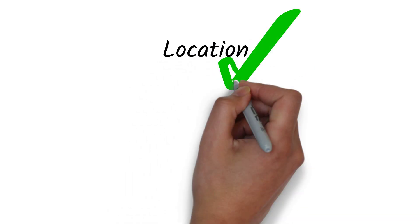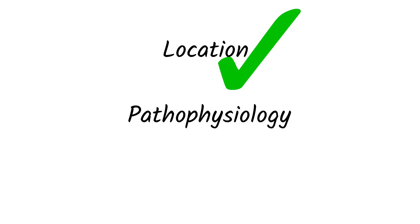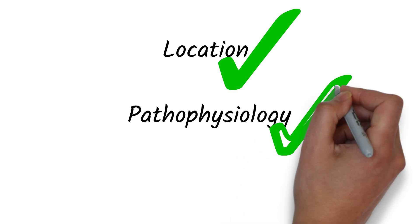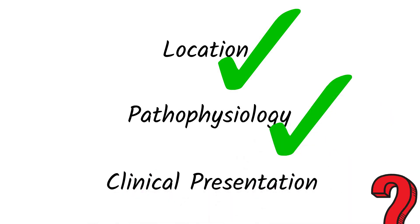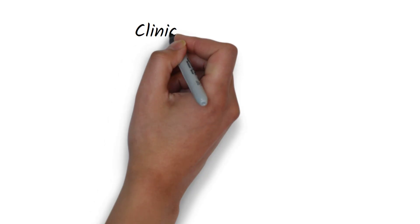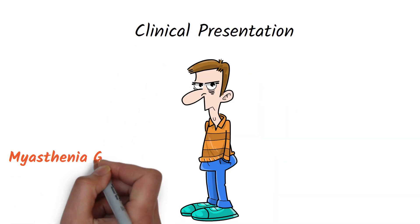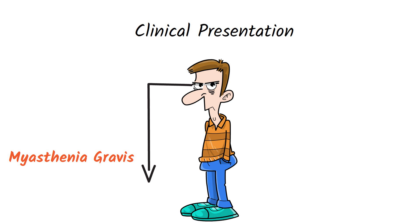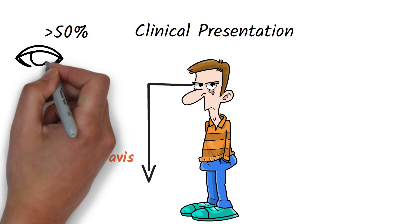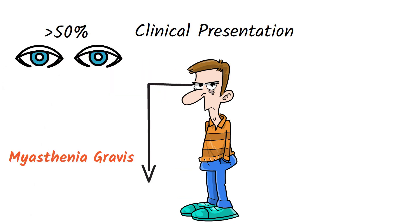Now we know where these diseases occur and how they cause damage. Next, let's move on to the clinical presentation. Myasthenia Gravis starts at the eyes and moves downwards. In more than half of the people who develop Myasthenia Gravis, their first symptoms affect the eyes.